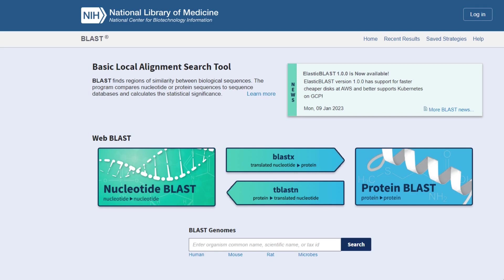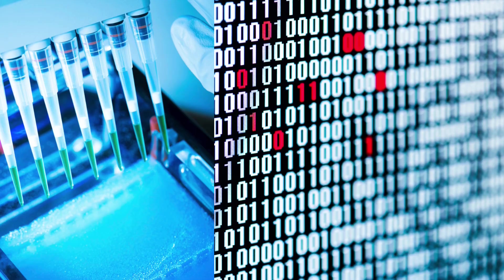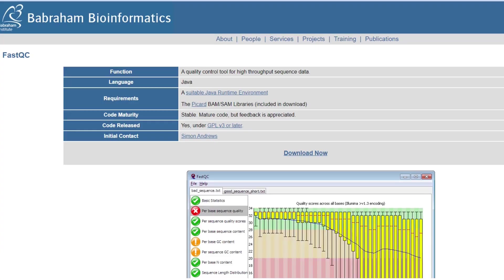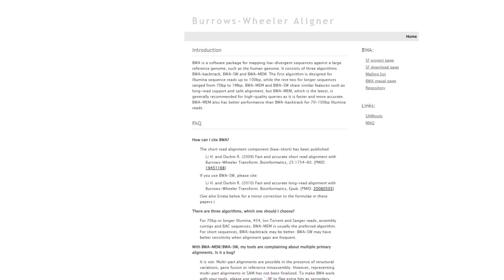Number 7: BLAST. This software is used for comparing nucleotide or protein sequences against a database to identify similarities or homologies. It is widely used for annotating and comparing genomes. Number 8: FastQC. This software is used for quality control of sequencing data. It provides detailed information about read quality, adapter contamination, and other sequencing artifacts.